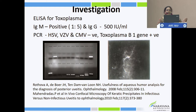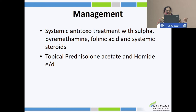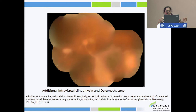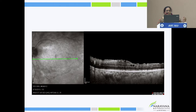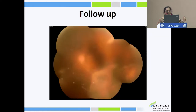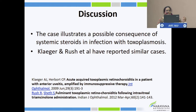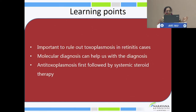Confocal showed central globular with dendritic pattern of keratic precipitates. We started the patient on anti-toxo treatment — sulfapyrimethamine and folic acid — followed by systemic steroids with topical steroids and cycloplegic agents. In view of extensive involvement, we gave intravitreal clindamycin along with dexamethasone. Following which we could see resolving retinitis in the left eye.